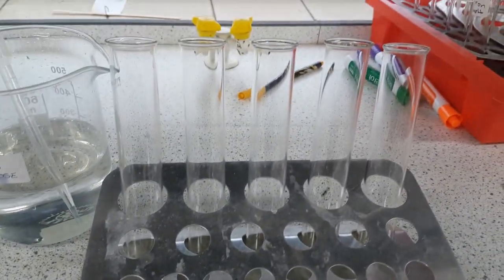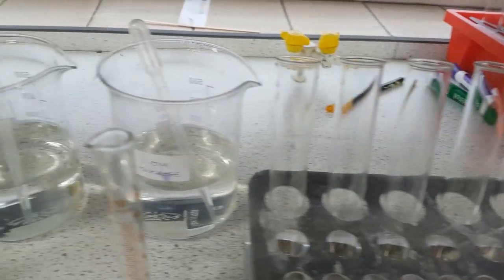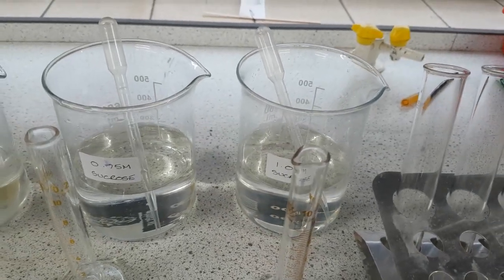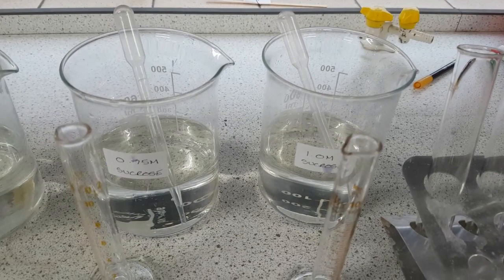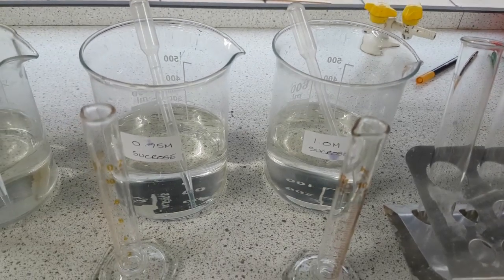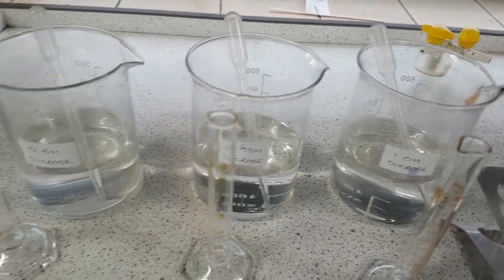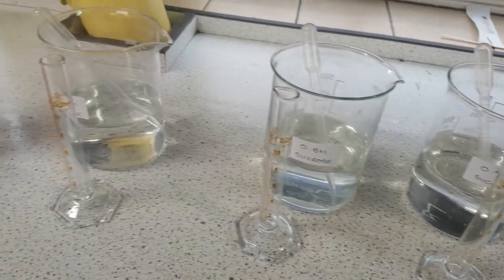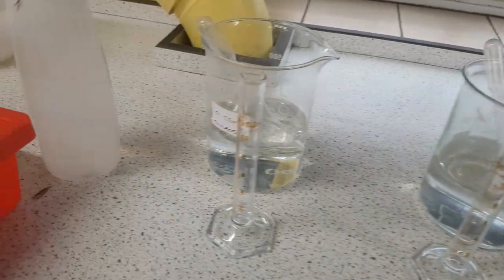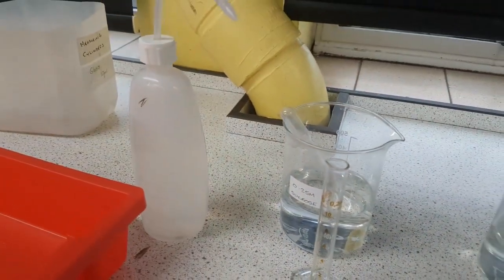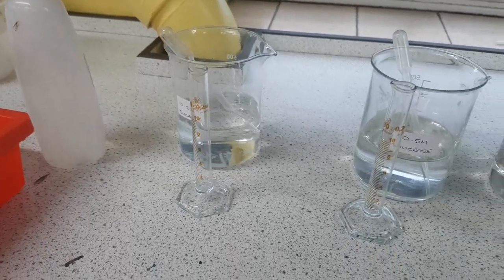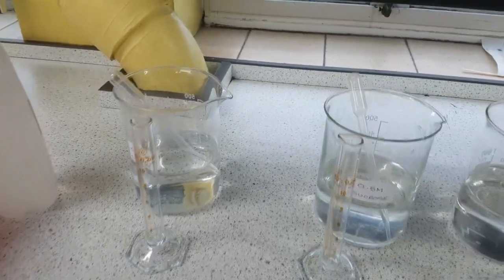We need a test tube rack with 5 boiling tubes and different concentrations of sucrose, which is basically a sugar solution. We have one molar, 0.75, 0.5, 0.25, and then finally distilled water. And we have measuring cylinders as well as pipettes.